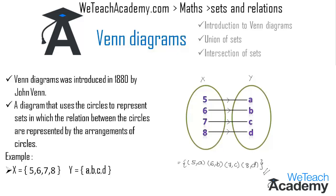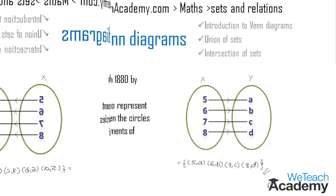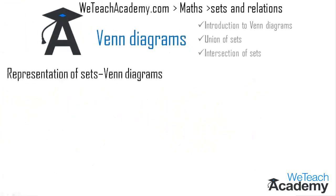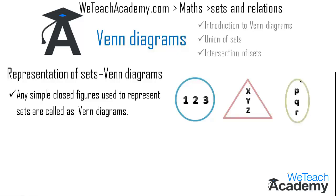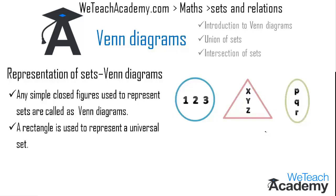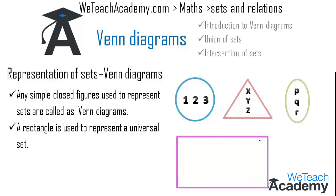Now let us learn how to represent sets under Venn diagrams. Any simple closed figure used to represent a set can be called a Venn diagram, so we can use a circle, a triangle, or an oval to represent a set. A rectangle is used to represent a universal set, which is denoted with the letter U.